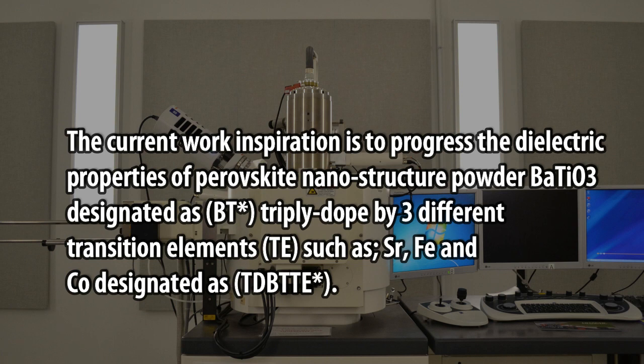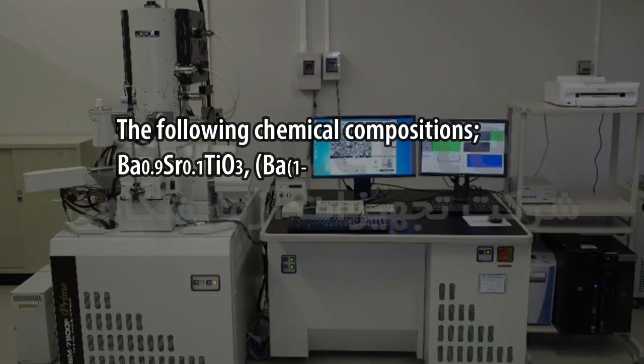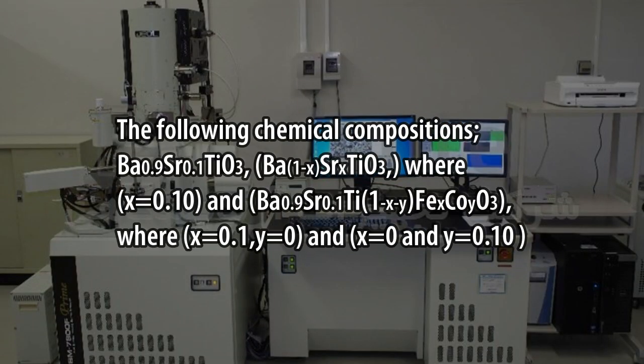The following chemical compositions: Ba0.9Sr0.1TiO3, Ba(1-x)SrxTiO3 where x equals 0.10, and Ba0.9Sr0.1Ti(1-x-y)FexCoyO3 where x equals 0.1, y equals 0.